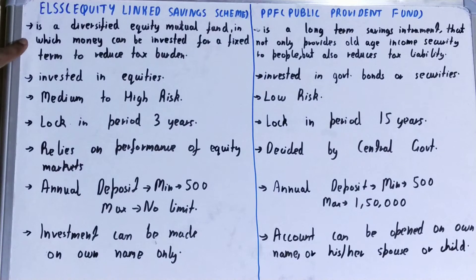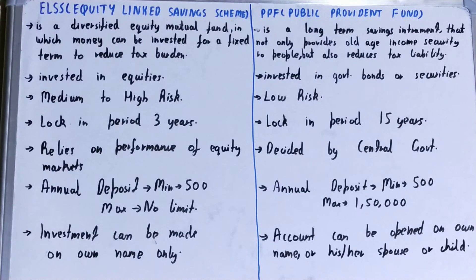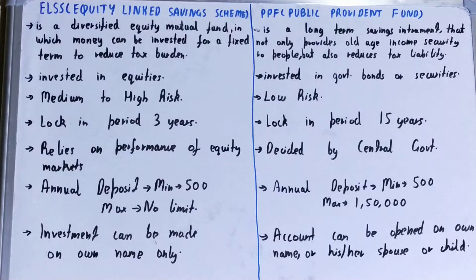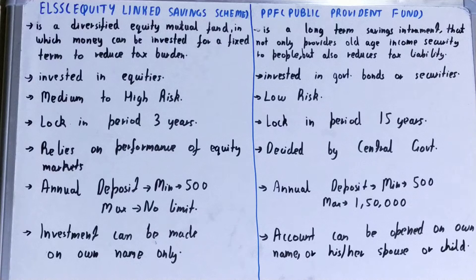ELSS is a diversified equity mutual fund in which money can be invested for a fixed term to reduce tax burden. If you talk about PPF, it is a long-term saving instrument that not only provides old age income security to people but also reduces tax liability. So it is like income security for older people as well as it removes the tax liability on them.